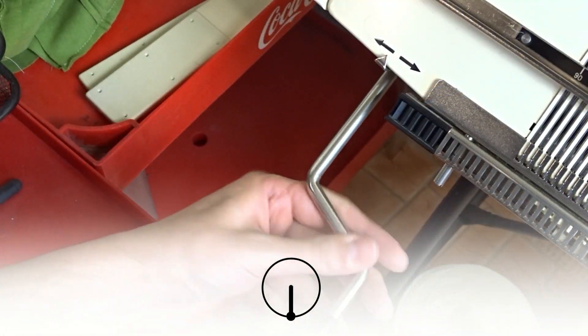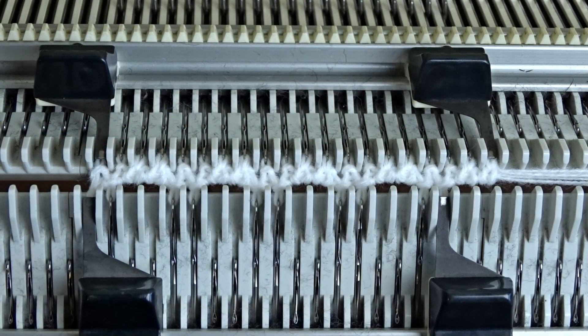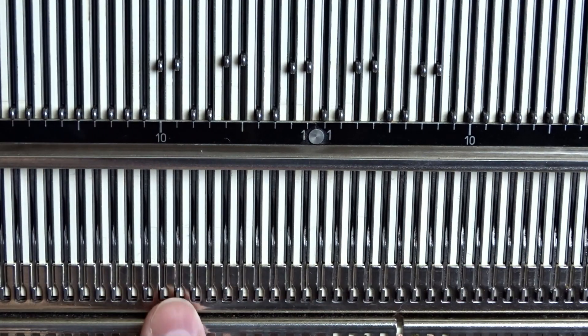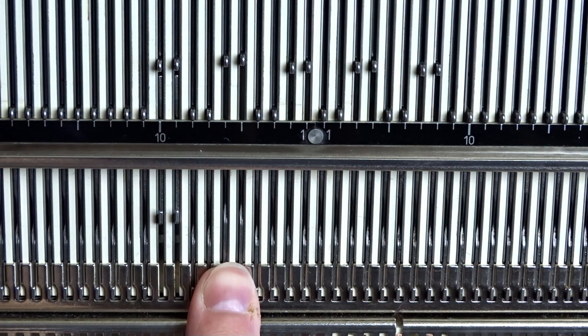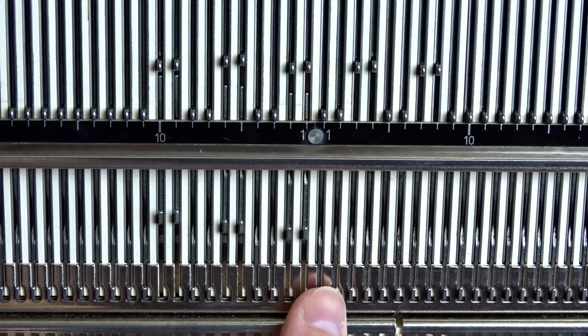Now rotate the racking handle clockwise to its lowest position. On the front bed raise pushers under all working needles, then put the left pusher of each group in resting position.